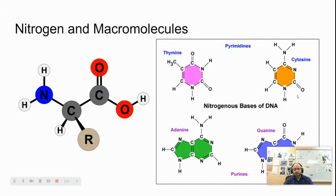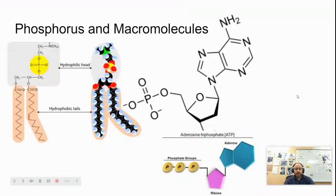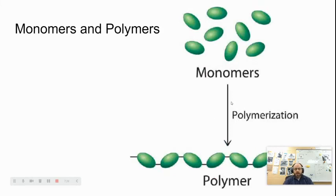Nitrogen is another element able to form lots of different bonds, making it very versatile. Nitrogen is not found in as many macromolecules as carbon — carbon is found in all of them. Nitrogen is primarily found in DNA and proteins. Phosphorus is another important element found in macromolecules; it is found mainly in nucleic acids, though it is also important in the formation of phospholipids, which make up cell membranes.